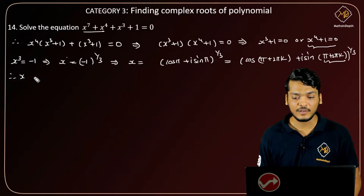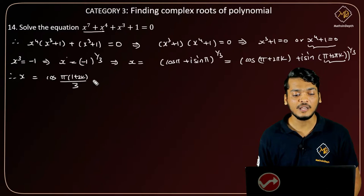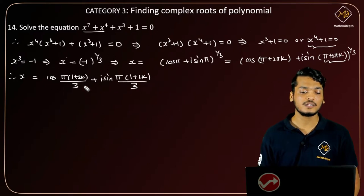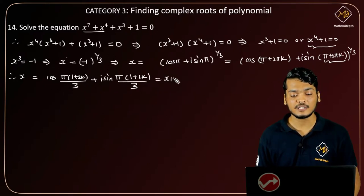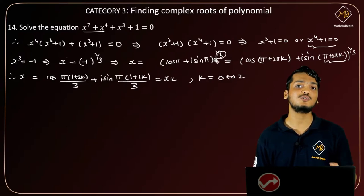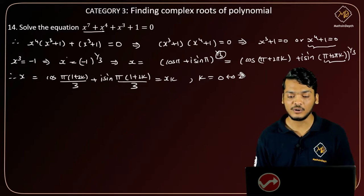Therefore by De Moivre's theorem, I can multiply 1 by 3 with angle pi plus 2 pi k, so I will get cos of pi into the bracket 1 plus 2k divided by 3, plus i into sine of pi into 1 plus 2k divided by 3. Let this equals to x_k. Here k will vary from 0 to 2, because here the power is 3, so k will vary from 0 to 1 less than 3, that is 2.